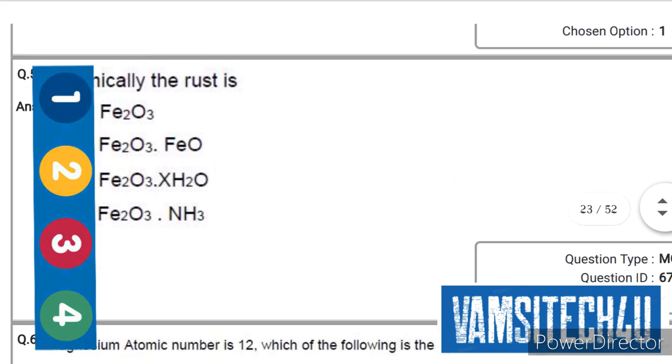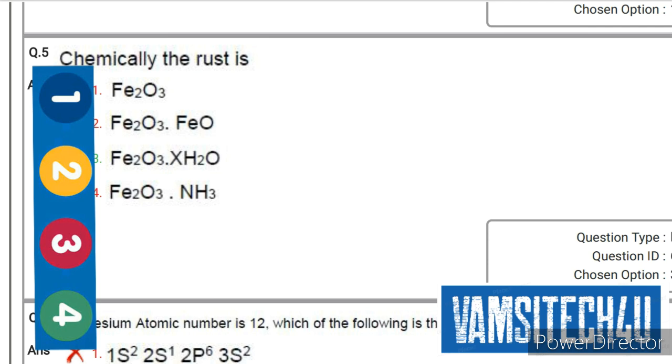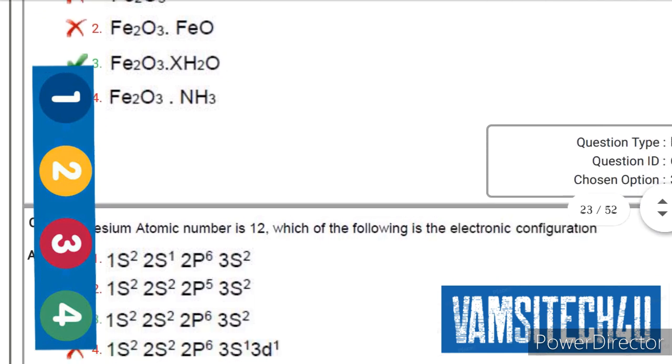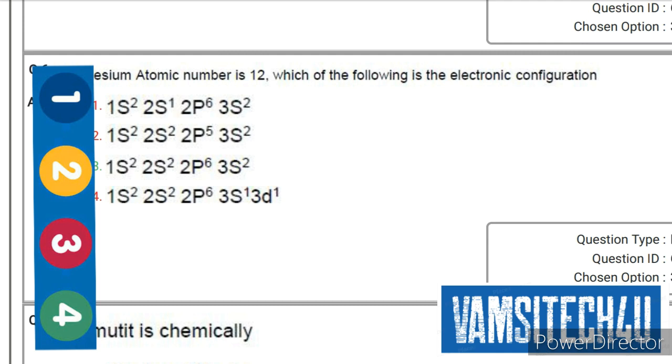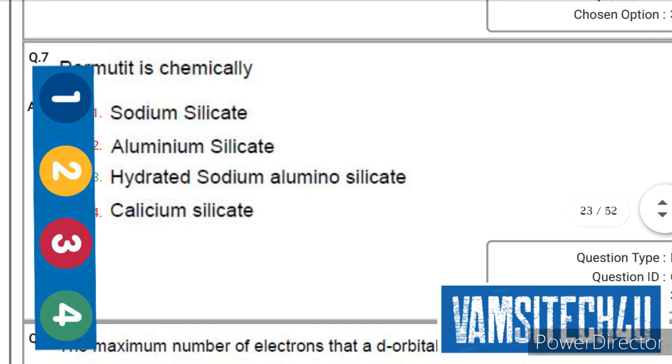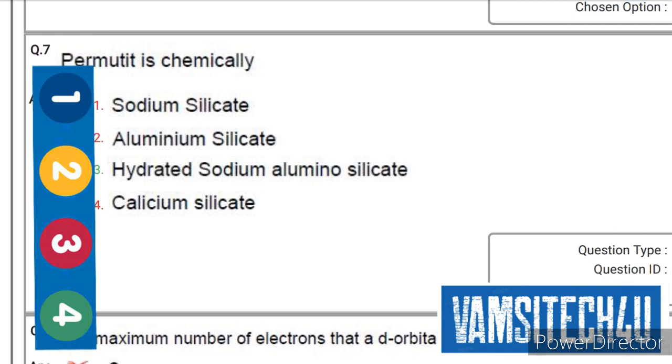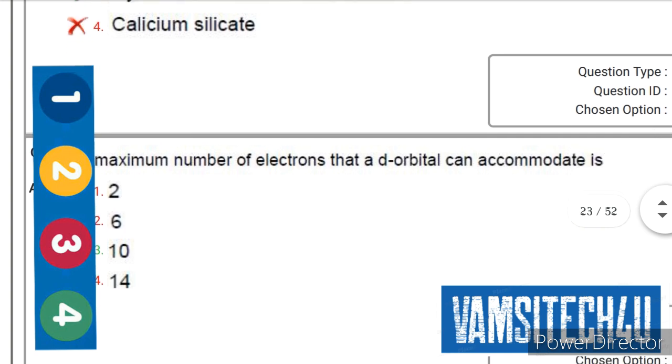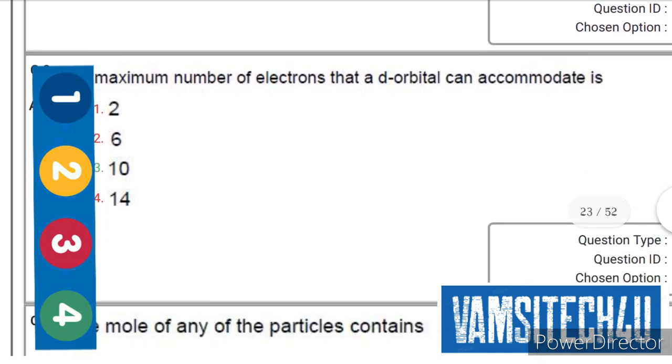Next question: Chemically rust is... the correct answer is third one, that is Fe₂O₃·xH₂O. Next question on hydrated sodium aluminum... the right answer is third one, that is 10.